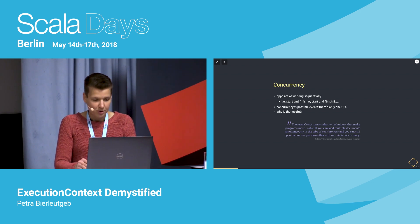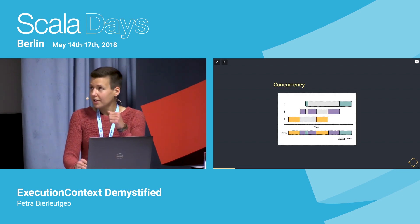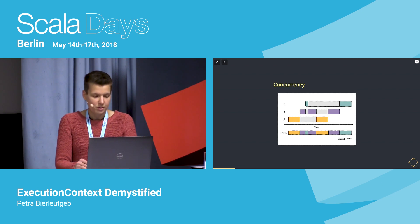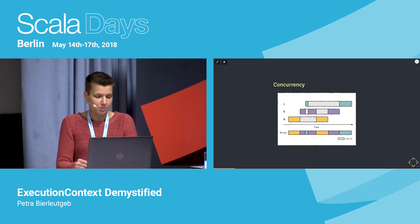In real life, it will actually often go faster because maybe during the gray areas, our task would have been blocked anyway. So if we would have waited for A to complete and then only started B, that would be quite inefficient. Whenever you have blocking waiting times, concurrency can be quite beneficial.